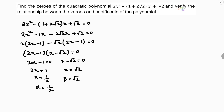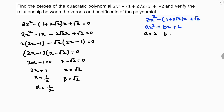Now I need to verify the relationship between the zeros and coefficients. Comparing the equation 2x² minus (1 plus 2√2)x plus √2 with the standard form ax² plus bx plus c, the coefficients are: a equals 2, b equals minus(1 plus 2√2), and c equals √2.